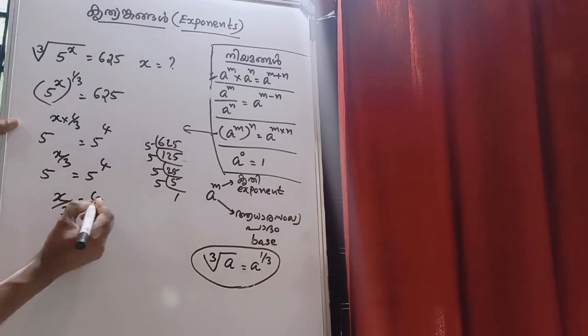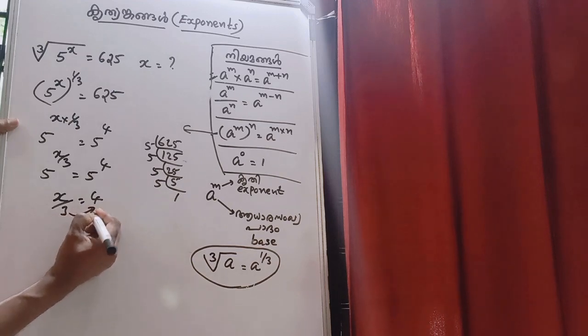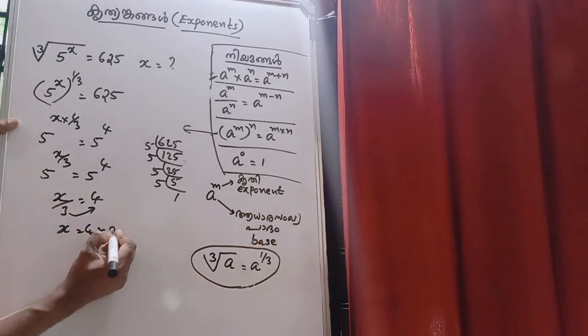It's not 3. So 9, 3 is equal to 3. x is equal to 4 into 3.